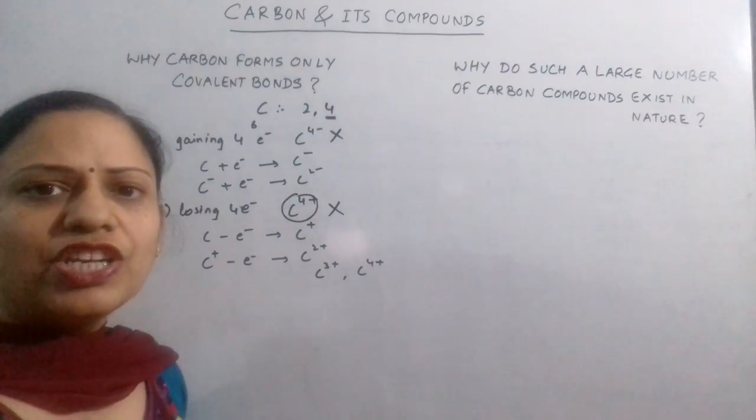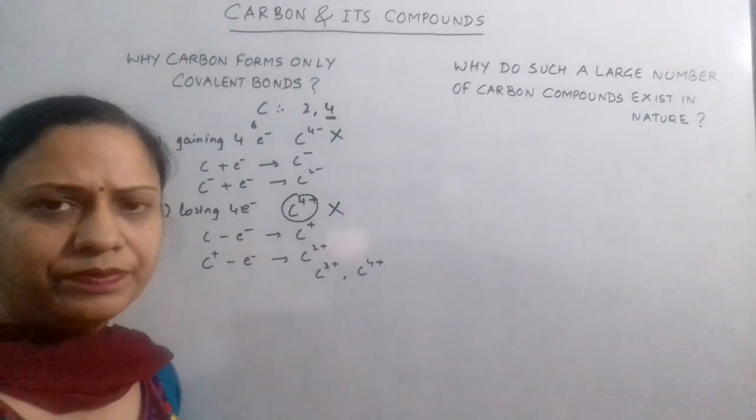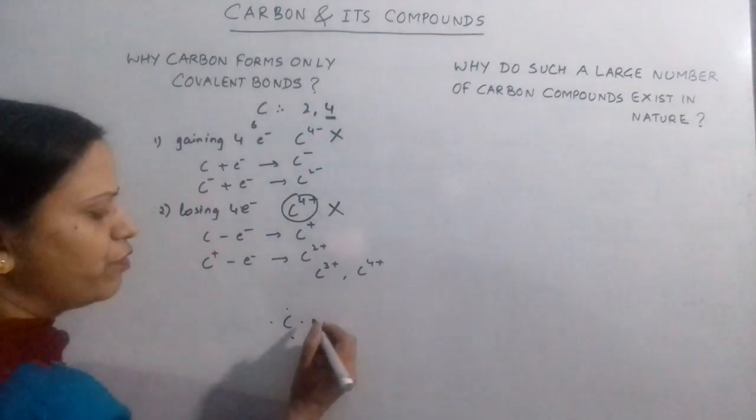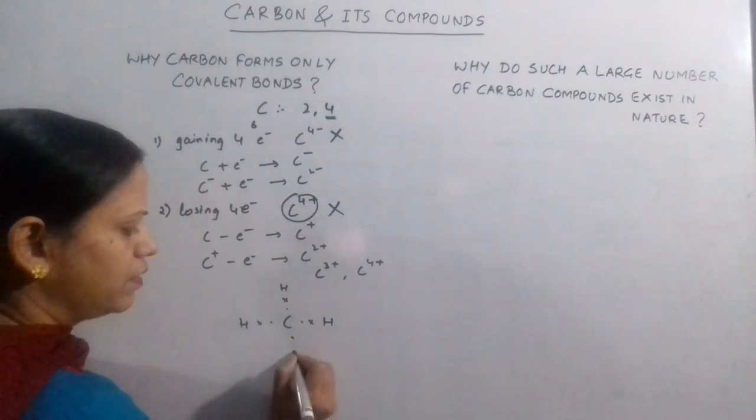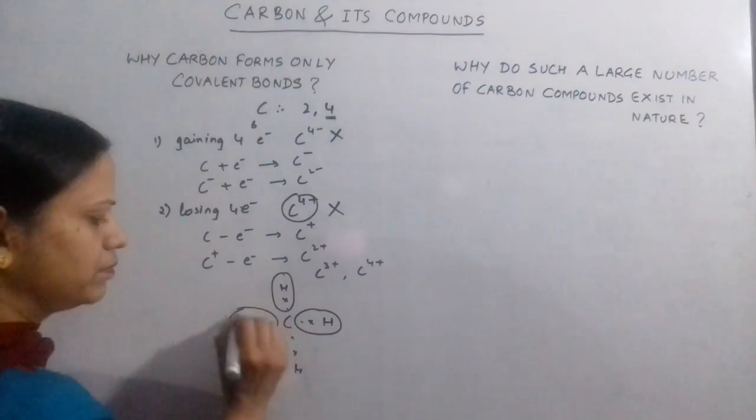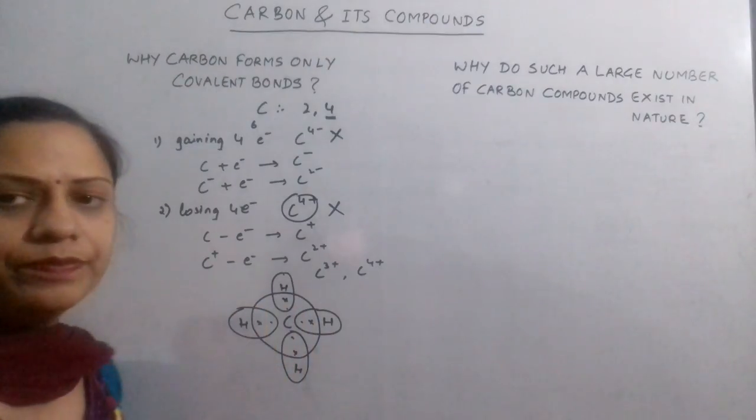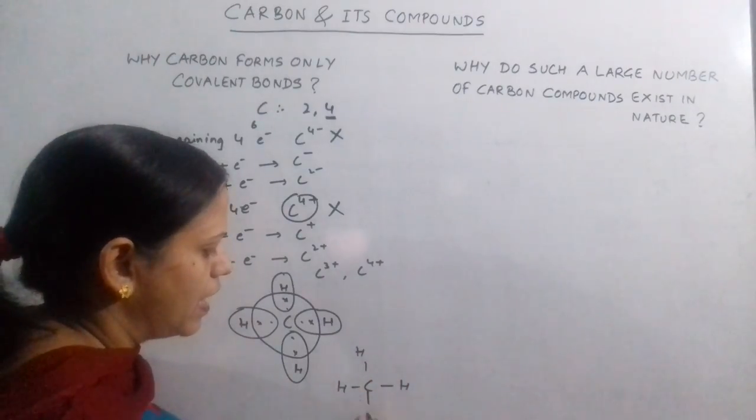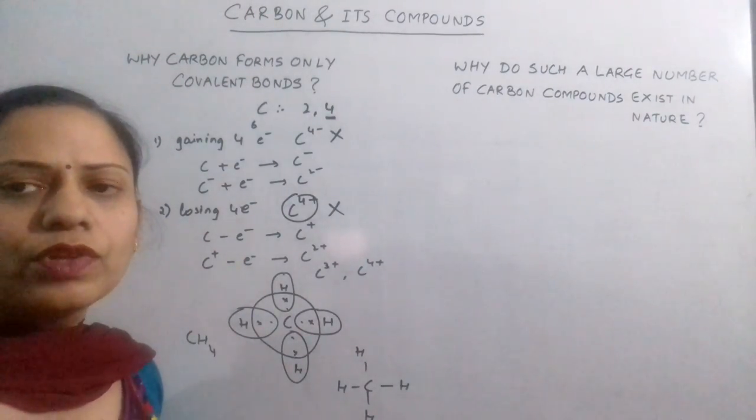Now the third possibility is sharing electrons. Sharing electrons is feasible because no charges are involved and it is easy because carbon has 4 electrons in its outermost shell. If a monovalent atom such as hydrogen comes close to it, the monovalent atom's duplet becomes complete and carbon's octet is also complete. In this way carbon forms 4 bonds with hydrogen and the structure I have made is of methane. This is how carbon forms covalent bonds.